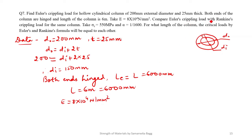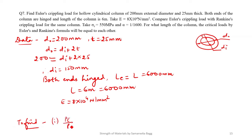We need to compare Euler's crippling load with Rankine's crippling load for the same column. I will calculate the ratio PE / PR.